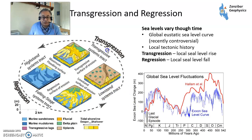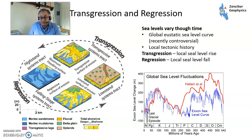Transgression and regression. Regression is when sea level falls — so you've got moving from a high stand to falling systems track, then at the bottom you've got low stand. Then you've got transgressive when sea level rises. This is sea level through time — the two curves being the Hallam and the Exxon sea level curve. Sea level is actually relatively low relative to where it has been.